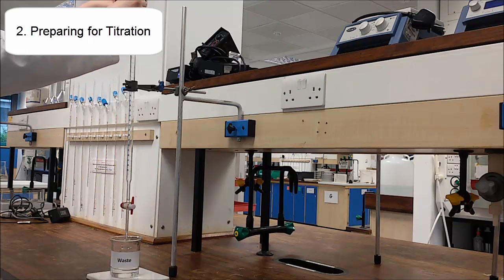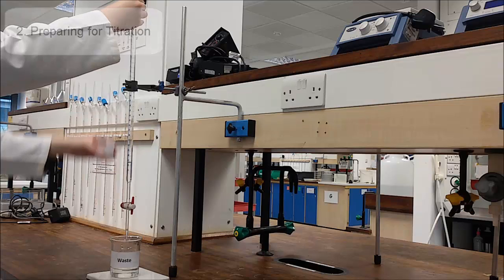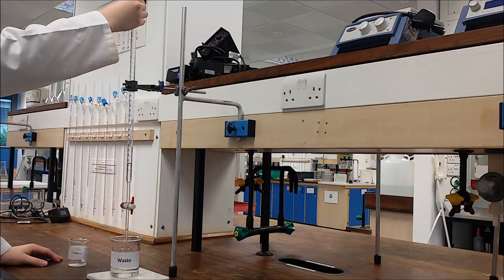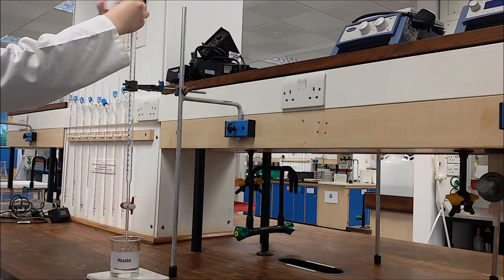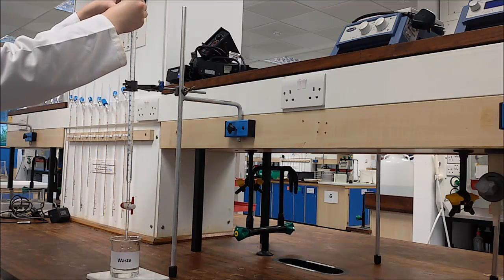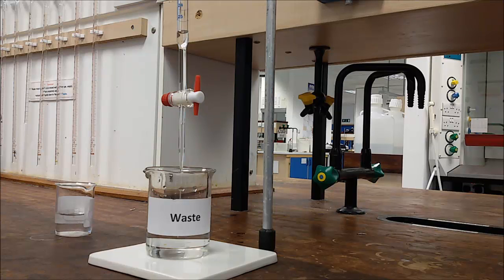Prepare the burette for titration. Ensure the tap is open and wash the burette with small amounts of titrant three times using a funnel to help you transfer the solution. Each time allow to drain fully.